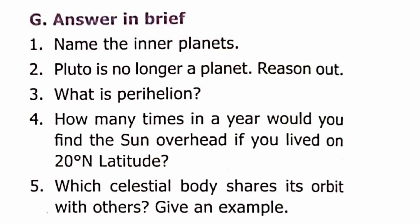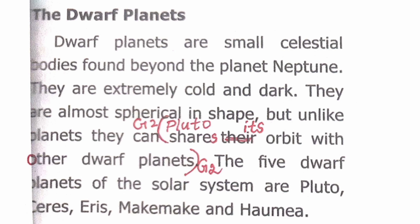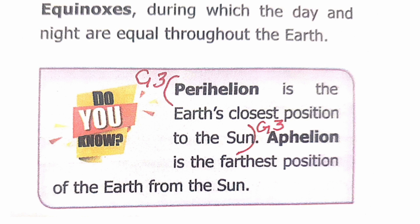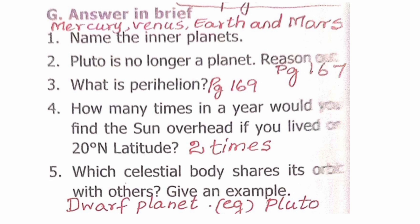Section G: Answer in Brief. Question 1: The inner planets are Mercury, Venus, Earth, and Mars. Question 2: Pluto is no longer a planet because it shares its orbit with other dwarf planets. Question 3: Perihelion is the Earth's closest position to the Sun. Question 4: If you live on 20 degrees north latitude, the Sun is overhead 2 times a year. Question 5: The celestial body that shares its orbit with others is a dwarf planet; example: Pluto.